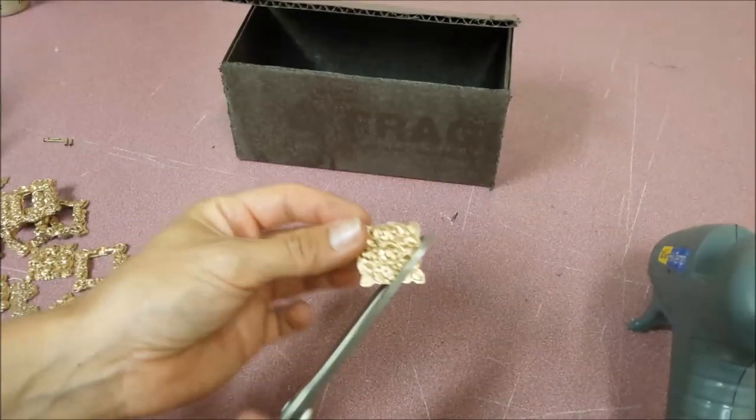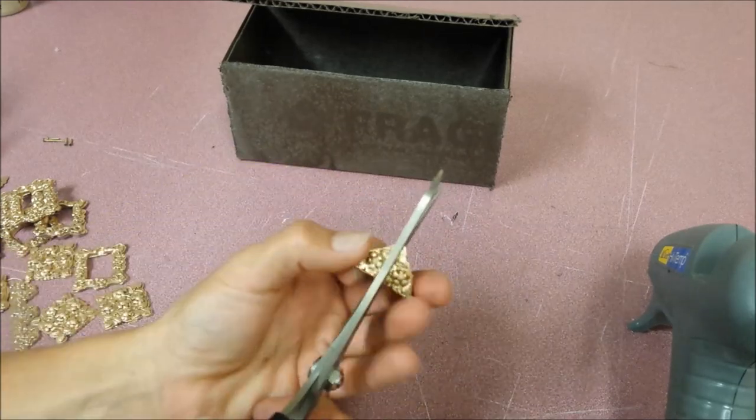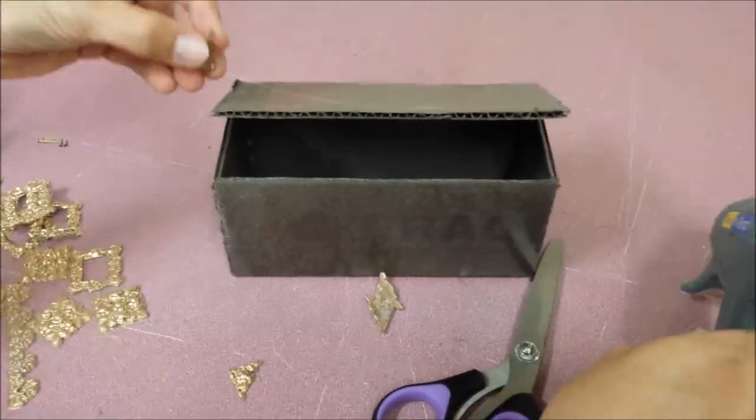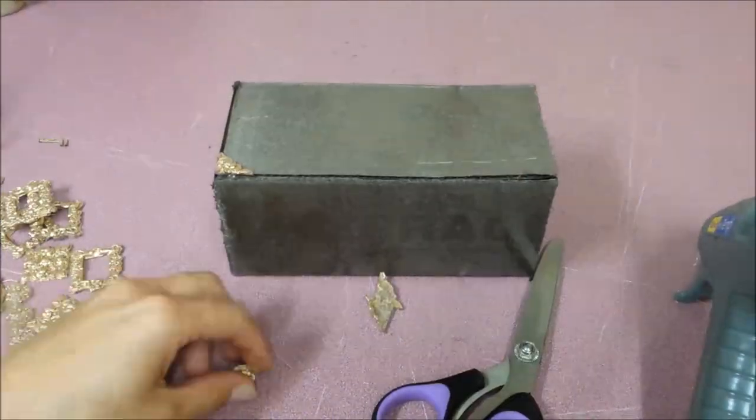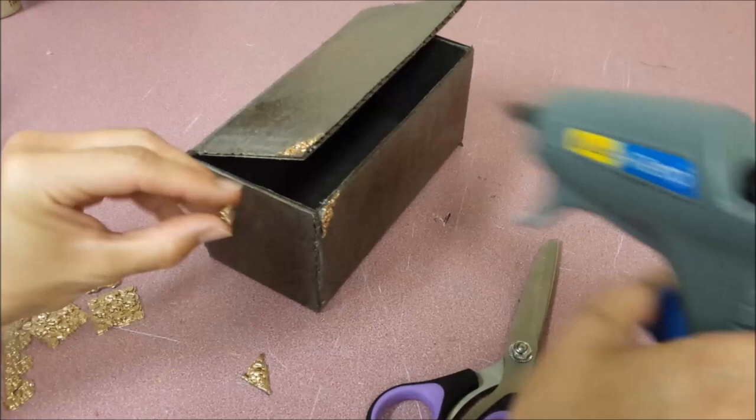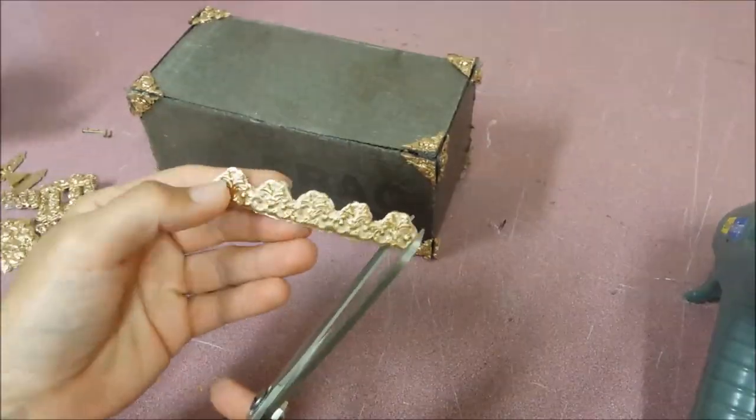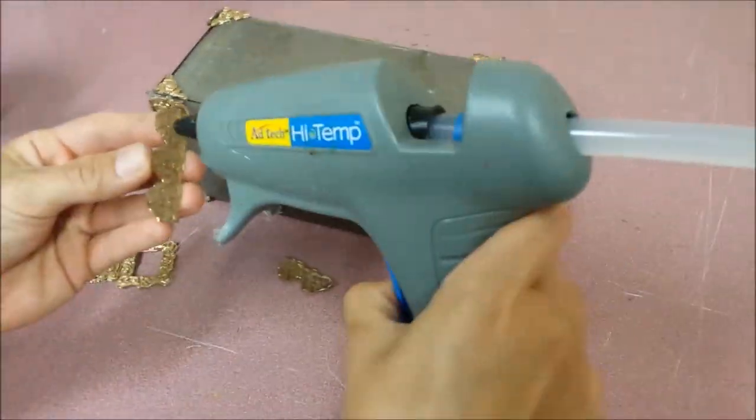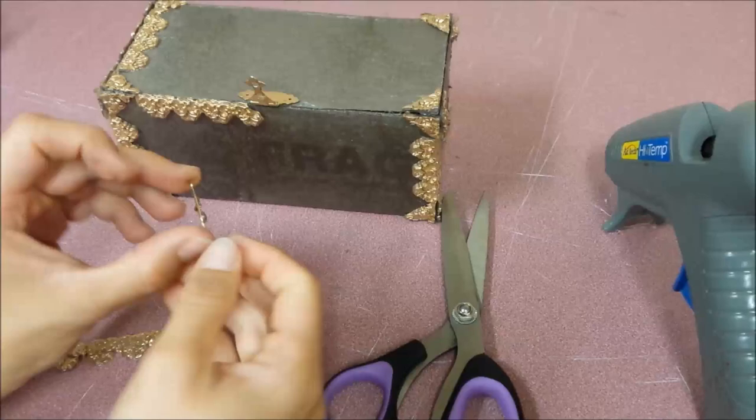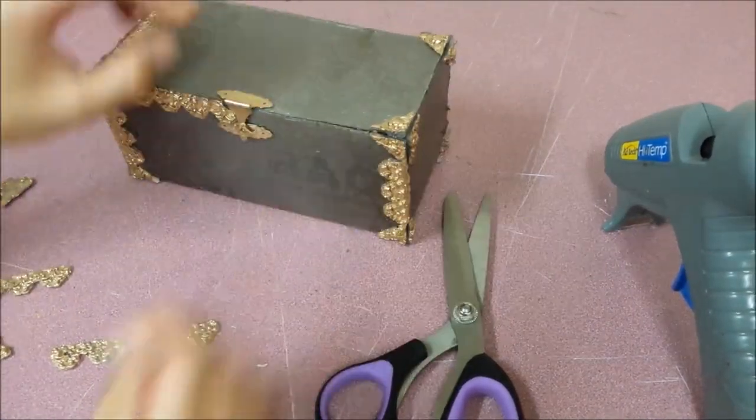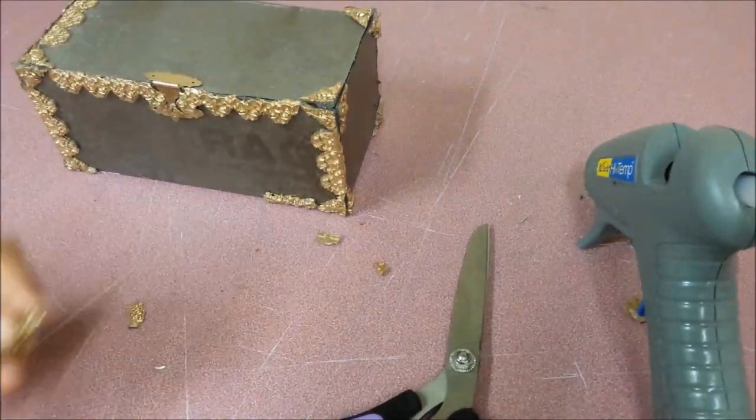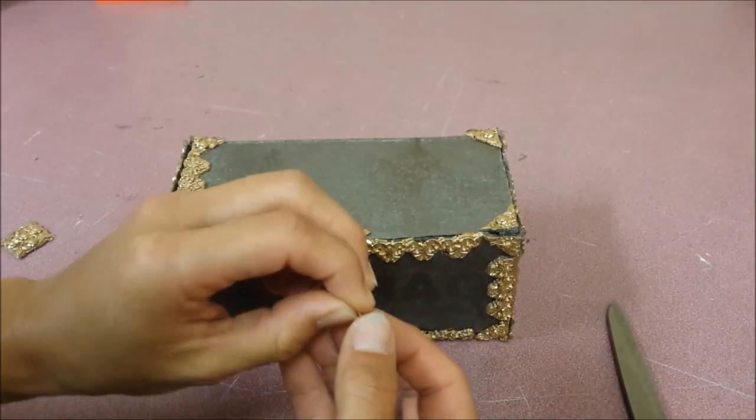I'm gonna start by cutting this one in four pieces and glue it on the corner. Now I'm gonna put nails in.